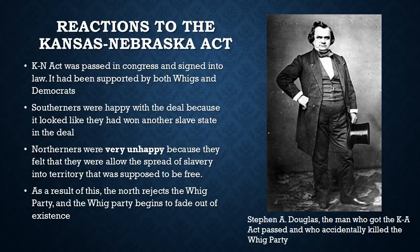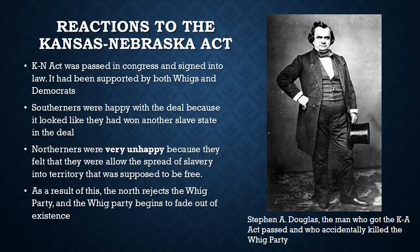There were a lot of problems that resulted from the Kansas-Nebraska Act. The act got passed in Congress, supported by both Whigs and Democrats. Southerners were super happy with this deal because an area that had previously been entirely off-limits to slavery north of the 36°30' line was now open to it, and they would probably get at least one more slave state. Northerners, however, were super unhappy because they felt slavery was being allowed to spread into territories that were meant to be free, especially since abolitionism had become more widespread in the North during the early 1850s. Northerners felt unhappy and cheated.